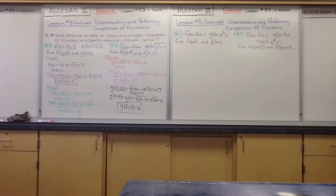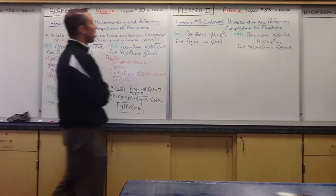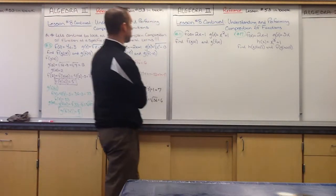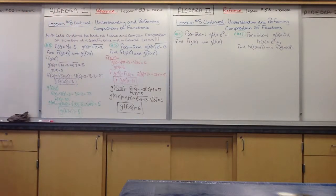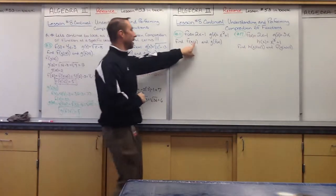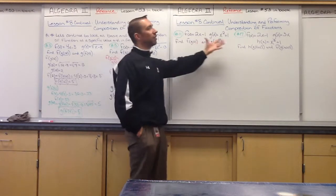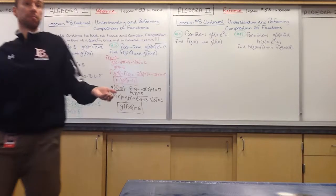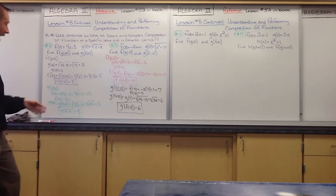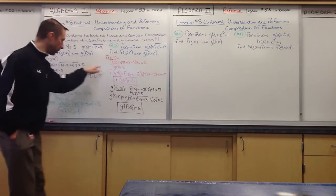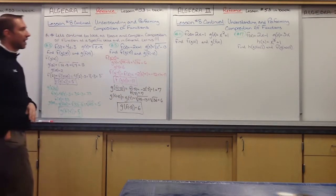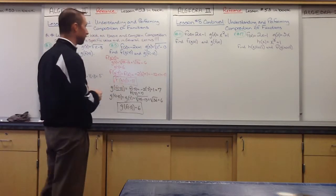Let's take a look at number 11. We have f(x) equal to 2x minus 1, and g(x) equal to x squared plus 1. We need to find f(g(x)) and g(f(x)). In these, we do not have a specific value at which we're evaluating — so all we're doing is taking whatever g(x) is and plugging it into f(x), and we're getting a general function back, not a number like before.